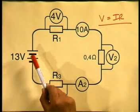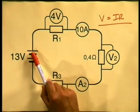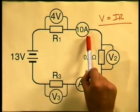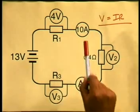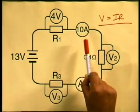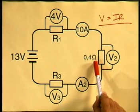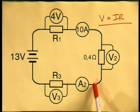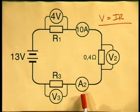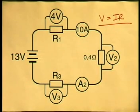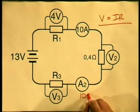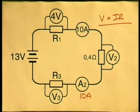Let's start at the positive terminal of the battery and follow the path of the current as it goes through R1 and through the ammeter. The current is 10 amperes. The reading on the ammeter will tell us this. So 10 amperes must also be going through the 0.4 ohm resistor and be the reading on ammeter A2. Therefore, if 10 amperes has been read in that part of the circuit, then 10 amperes must also be read at this part of the circuit. So the reading on A2 is 10 amperes.